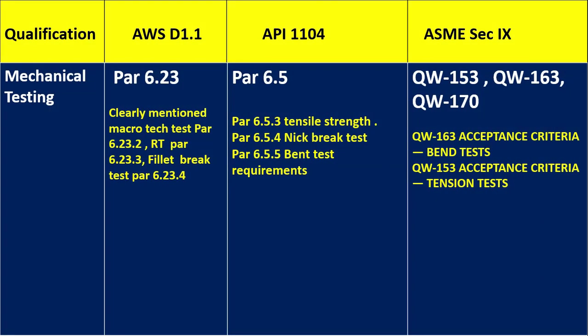Next is mechanical testing. In AWS D1.1, para 6.23 clearly mentions the macro etch test per 6.23.2, the bend test per 6.23.3, and the fillet break test per 6.23.4. For API 1104, para 6.5 applies: 6.5.3 is tensile strength, 6.5.4 is the nick break test, and 6.5.5 is the bend test requirement. For ASME Section 9, QW-153 covers acceptance criteria for the tension test, QW-163 for the bend test, and QW-170 for the fillet weld test.